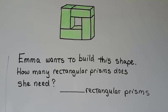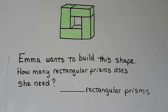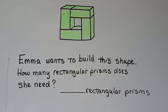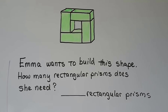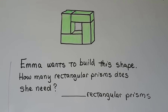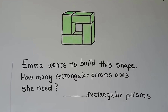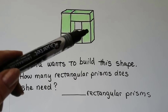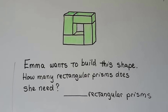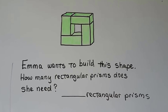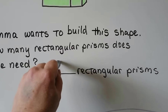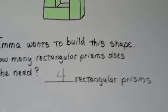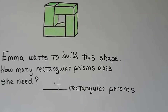Emma wants to build this shape. How many rectangular prisms does she need? Let's count: in the front I see one, two, three, four rectangular prisms. If you said four, you got it right!